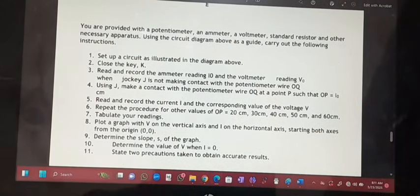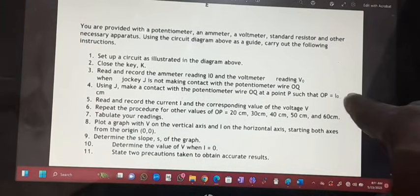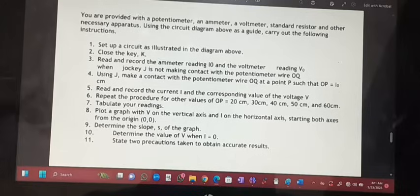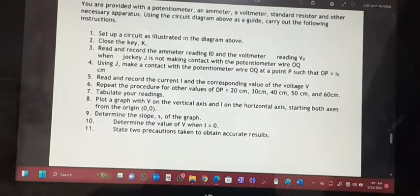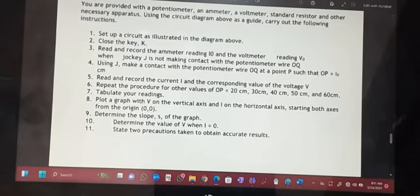Using J, make contact with the potentiometer wire O-Q at a point such that O-P is equal to 10 cm. Read and record the current I and the corresponding value of the voltage V. Repeat the procedure for other values of O-P equal to 20 cm, 30 cm, 40 cm, 50 cm, and 60 cm.